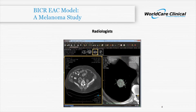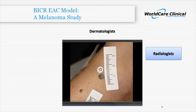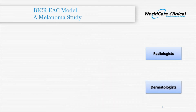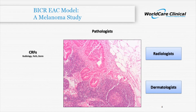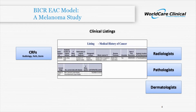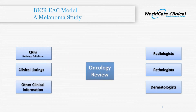Let's take a look at a complex EAC study of melanoma. In this study, the overall tumor burden of the patient needs to be assessed. Therefore, we have a radiological assessment of total non-cutaneous tumor burden, as well as a dermatological assessment of cutaneous tumor burden. This data is summarized in a CRF, along with information from biopsies and selected clinical listings, as well as other patient information. An oncologist is also added to facilitate a gestalt understanding of the patient disposition.